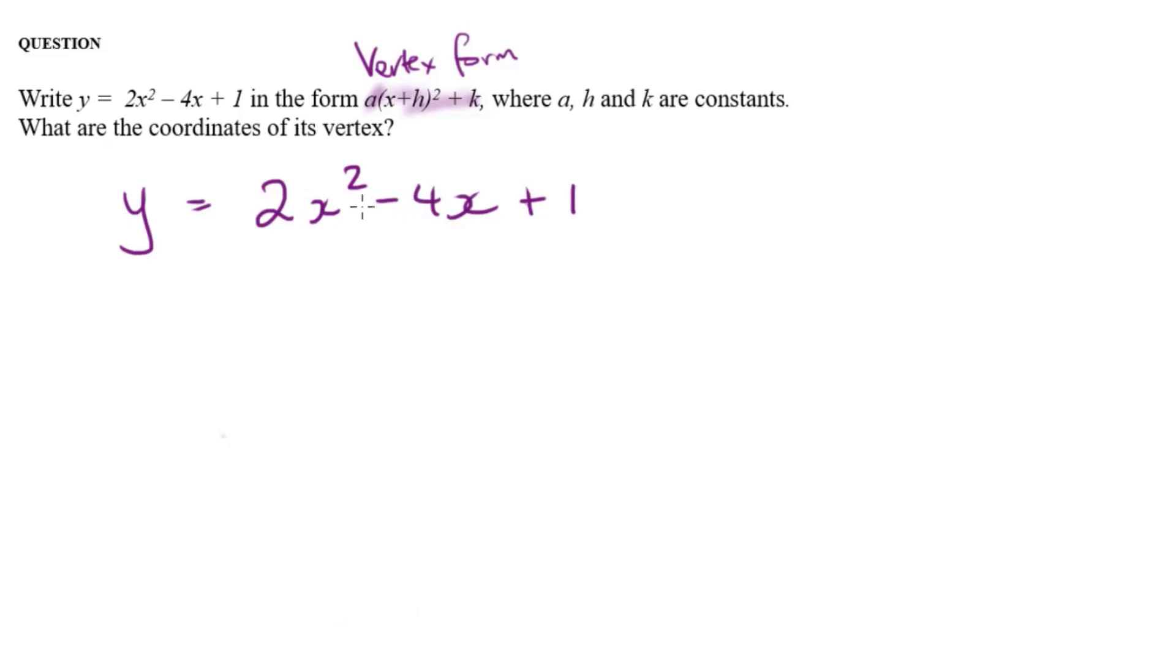And before I can complete the square, the coefficient of x squared has to be 1. I can't do it if its coefficient is 2. So that means I have to factor out 2 from these two expressions.